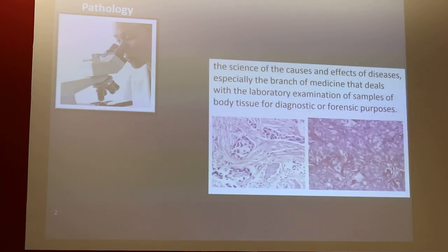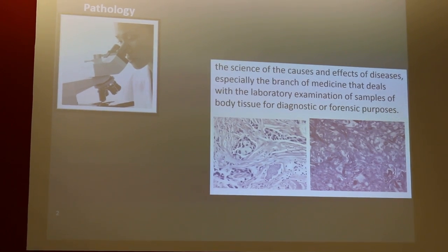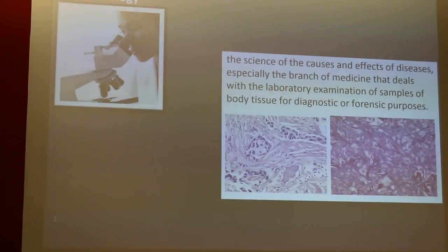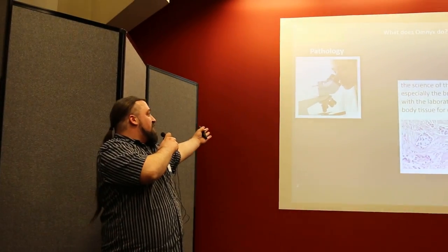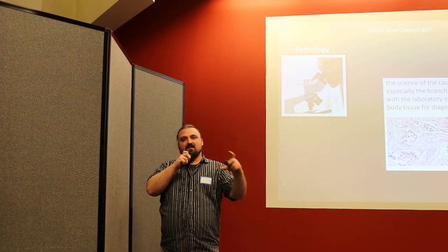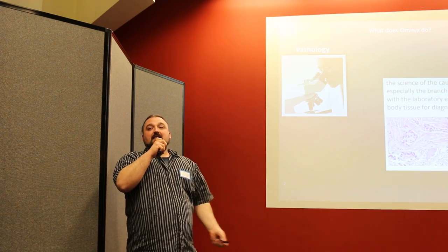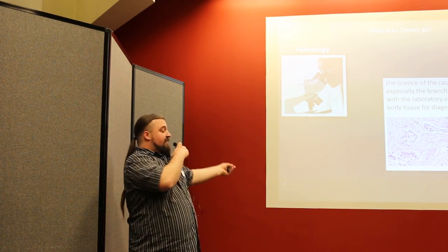So what does Omnics do? To answer that question, we really need to talk about pathology. What is pathology? It's the science of the causes and effects of diseases — especially the branch of medicine that deals with laboratory examination of samples of body tissue for diagnostic or forensic purposes. A pathologist takes microscope slides, looks at tissue at a very high resolution, looks for patterns and anomalies, and that ultimately leads to a diagnosis.